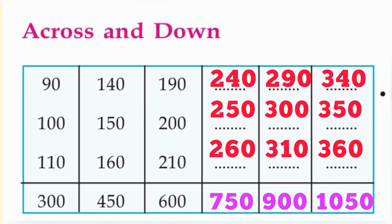And the column sums are: the first column gives 300, 450, and 600. Listen carefully — what is the difference? 150 is increasing each time: 300 plus 150 is 450, and 450 plus 150 is 600. So the next answers are 750, 900, and 1050.